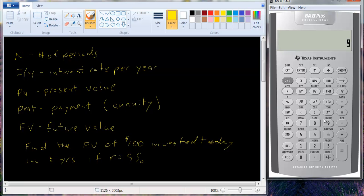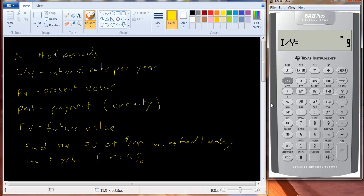And on the calculator, you put it in as a whole number. You don't put it in as 0.09 as you would if you were doing a calculation by hand. The present value is $100 today, so that's present value. So let's type that in, PV. And then we hit CPT, compute FV. So it's going to be $153.86.